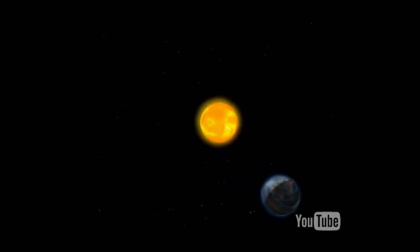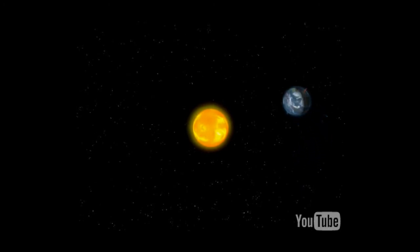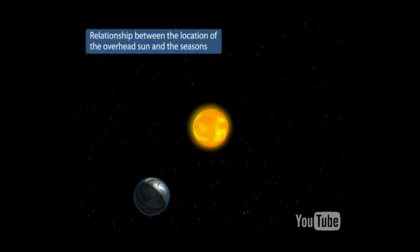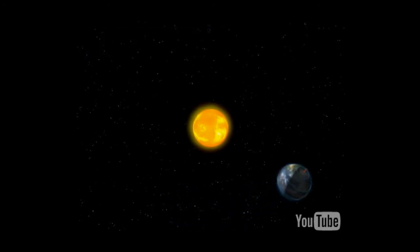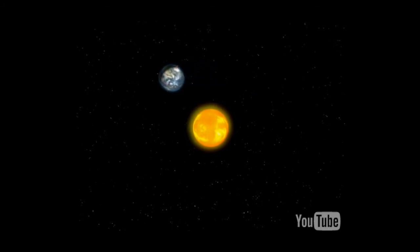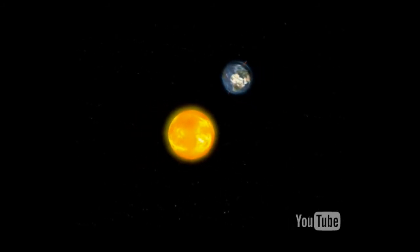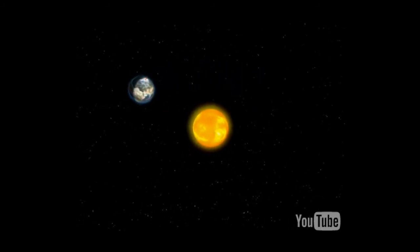The tilting of the axis results in direct sunlight falling on different places during different seasons, causing variations in the duration of days, nights, and seasons. The revolution of the earth and the tilting of the axis also results in different angles of the sun during different periods. When the sun is directly overhead, the earth's surface and the midday sun form a 90-degree angle. Different locations of the overhead sun cause variations in the amount of solar radiation received in different areas and at different periods.